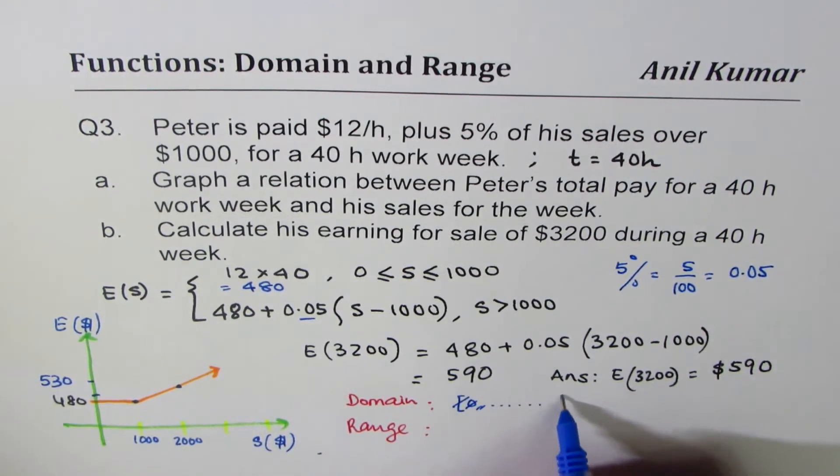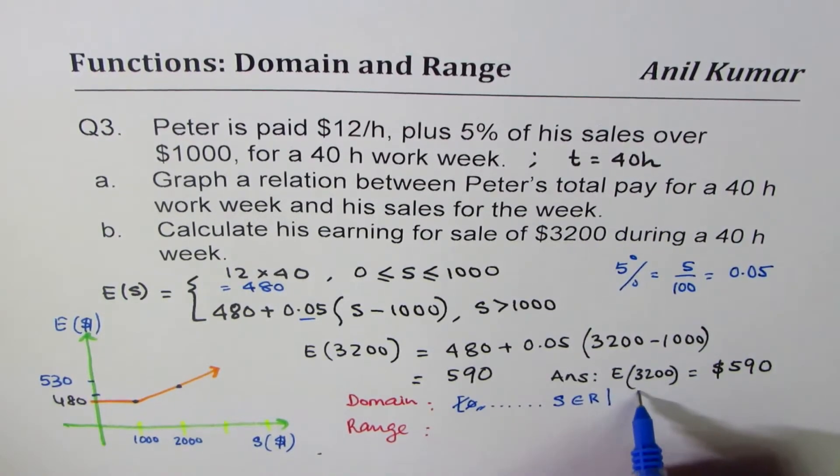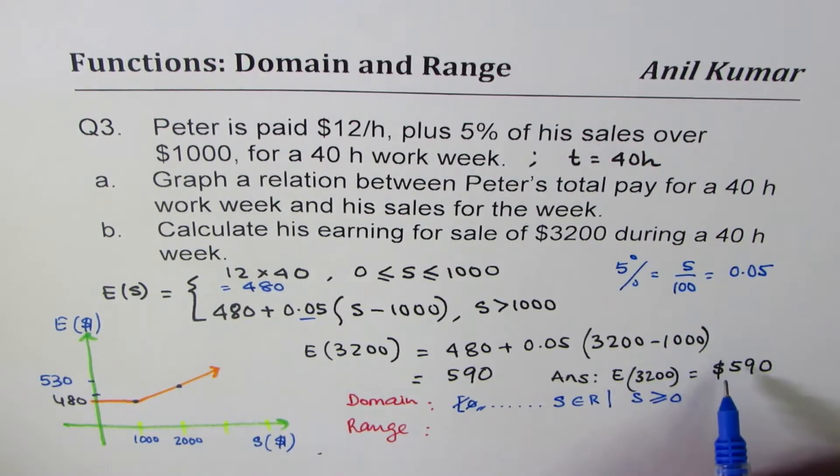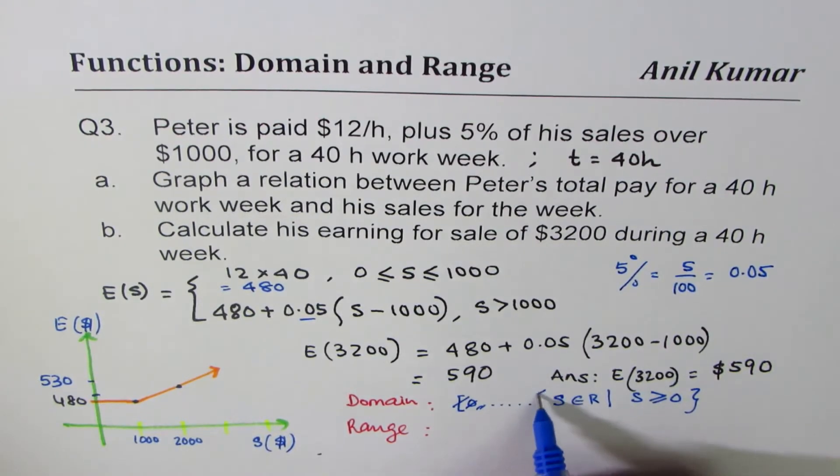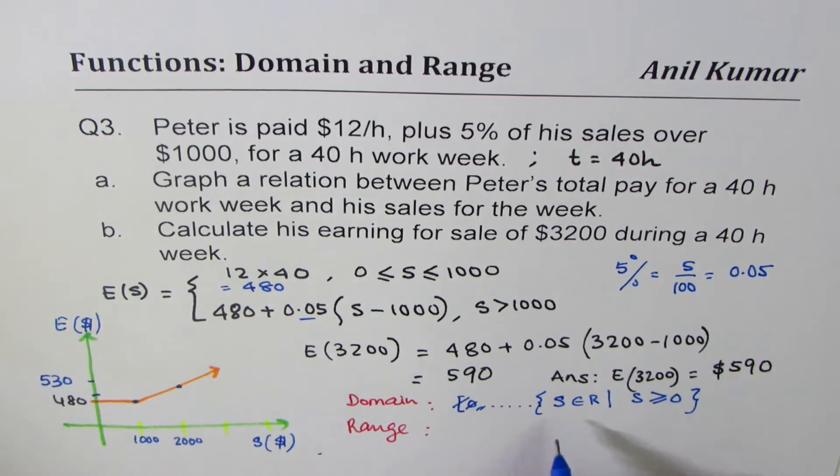So you could say, instead of using this, we can say sales belongs to real numbers where sales is greater than or equal to 0. So that's the domain.